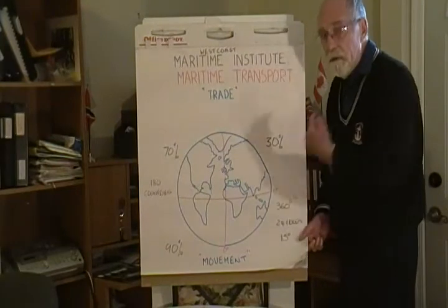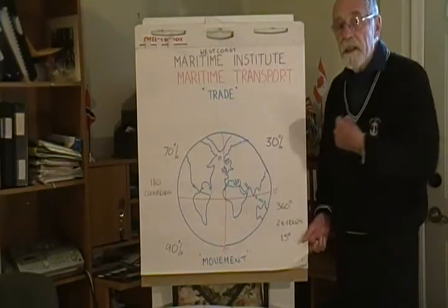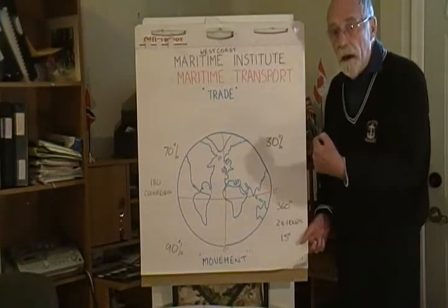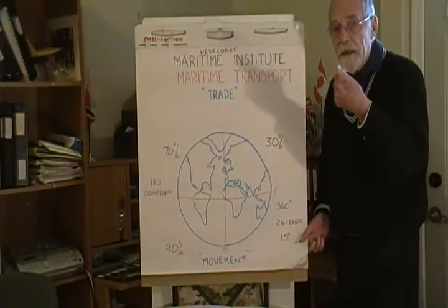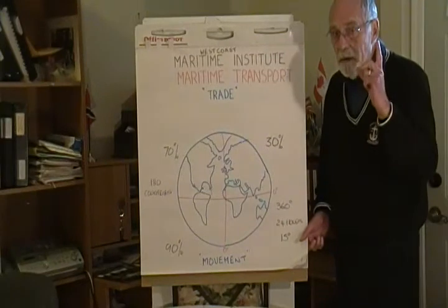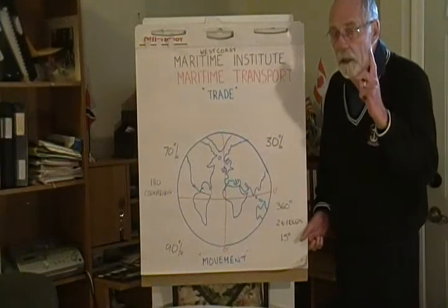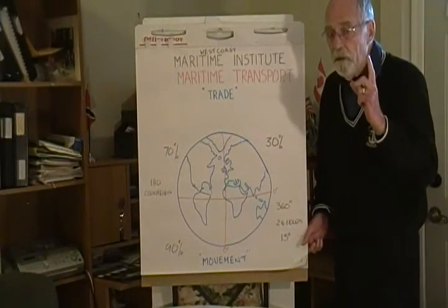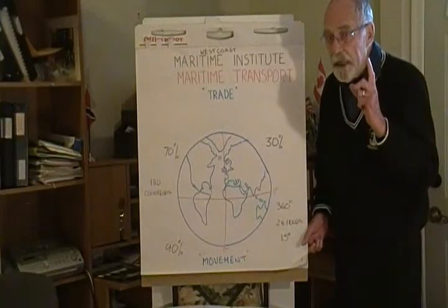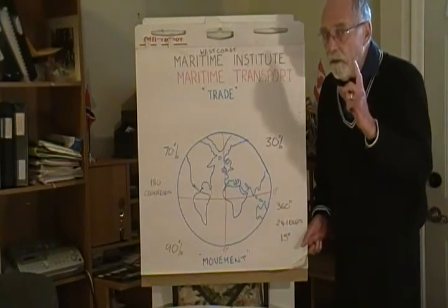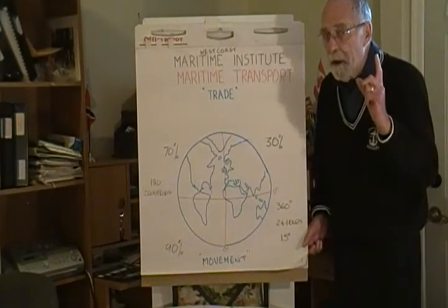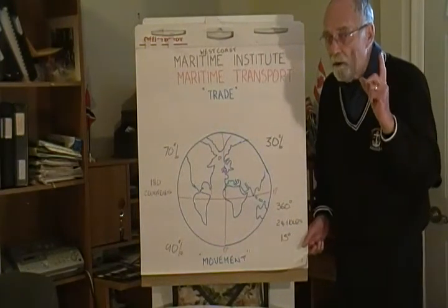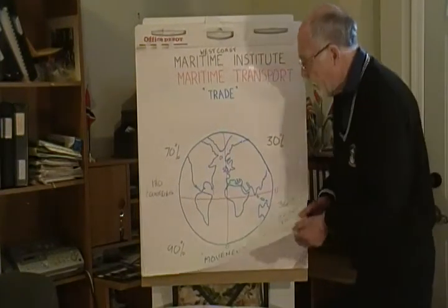The world is 360 degrees round and it turns on its axis once every 24 hours. So for every 15 degrees, there's one hour time difference. So do not phone me at 3 o'clock in the morning — it's not appreciated.